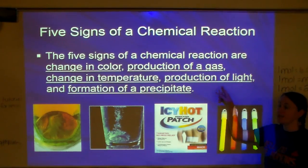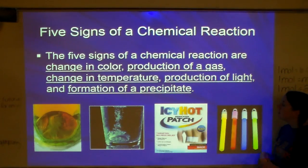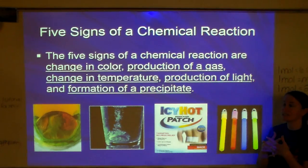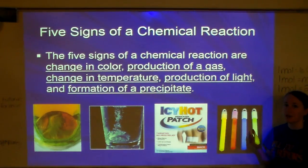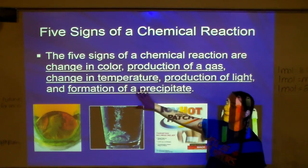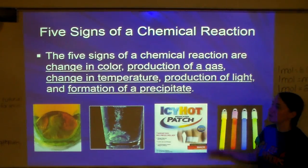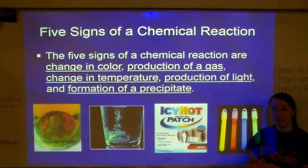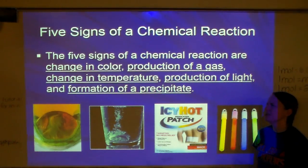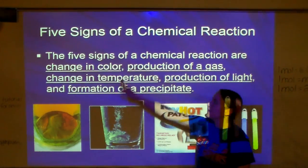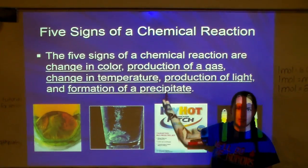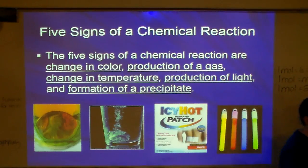Next is production of light. An example would be a glow stick — when you crack it, you're mixing the two chemicals inside, and it spontaneously starts glowing because a chemical reaction is occurring. The last sign is formation of a precipitate, which we'll talk about on the next slide. So the five signs are: color, gas, temperature, light, and precipitate.